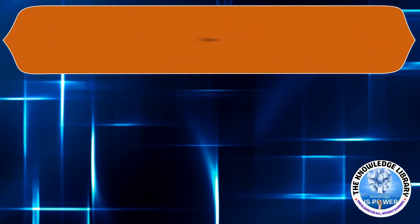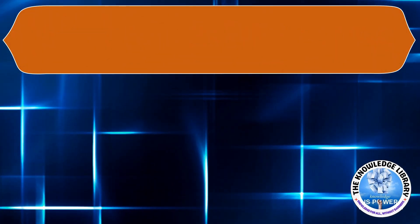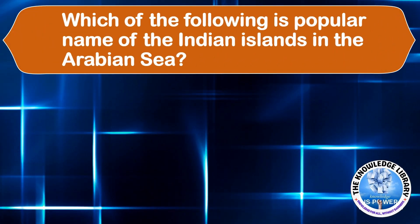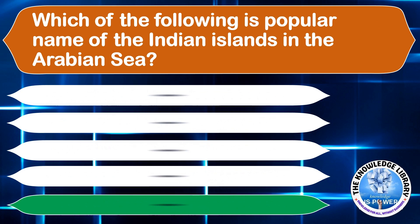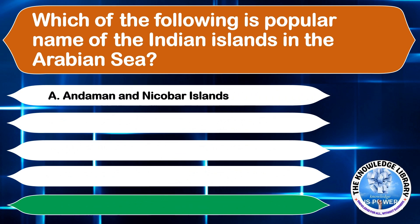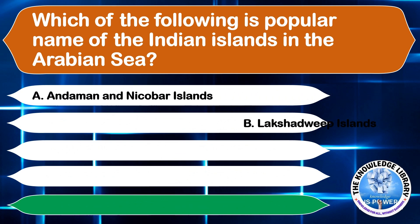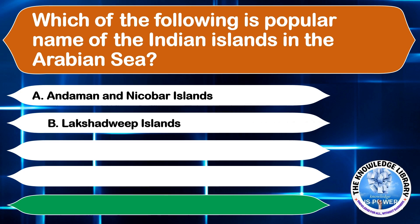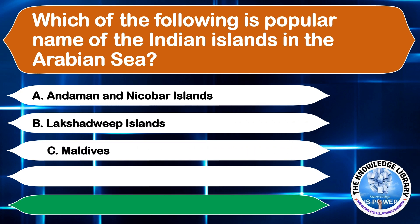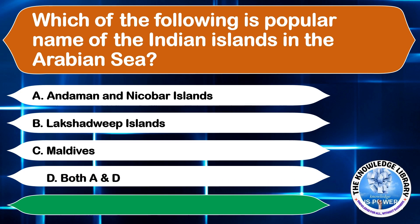Which of the following is the popular name of Indian islands in the Arabian Sea? A. Andaman and Nicobar Islands, B. Lakshadweep Islands, C. Maldives, or D. Both A and D. The correct answer is option B, Lakshadweep Islands.